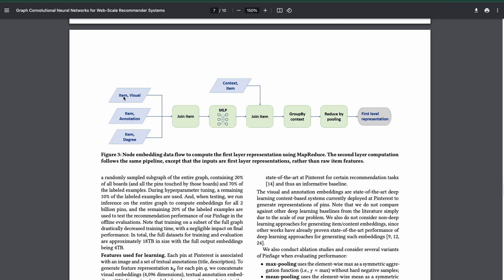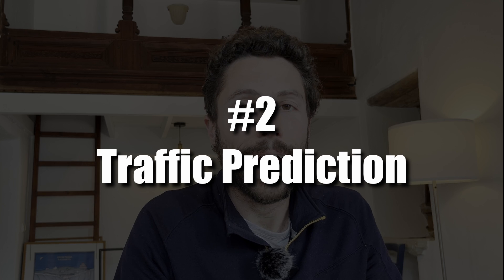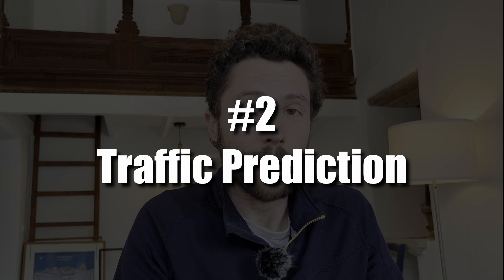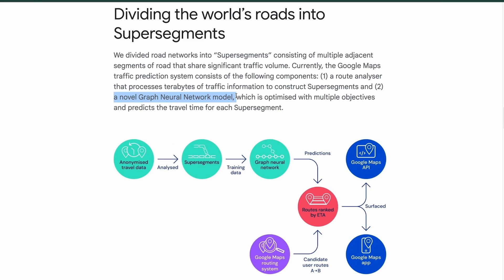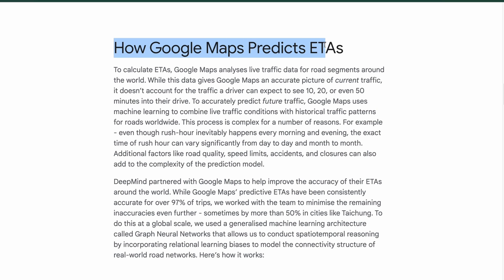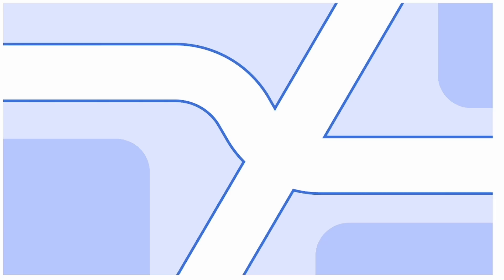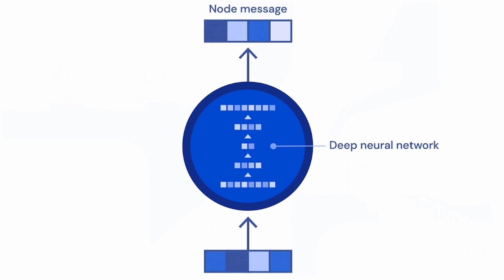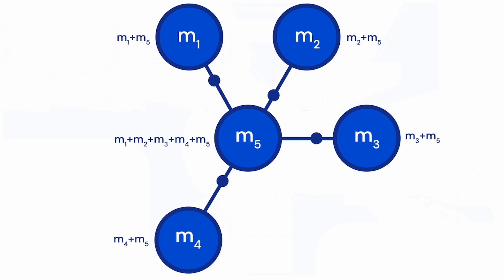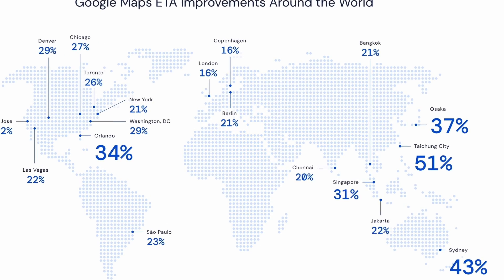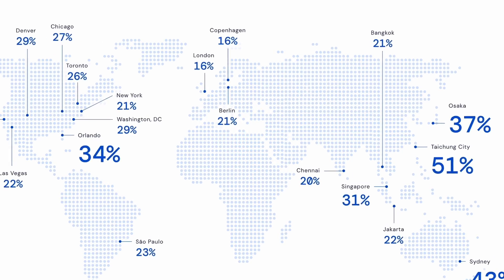Hit rate measures the probability that recommendations made by the algorithm contain items related to the query. Another highly impactful application came from a team at DeepMind, who showed how GNNs can be applied to transportation maps to improve the accuracy of estimated time of arrival, or ETA. The idea is to use GNNs to learn representations of the transportation network that capture its dynamics. This system is actively deployed at scale by Google Maps in several major cities, and the graph-based approach led to up to 50% accuracy improvements compared to the prior production approach.